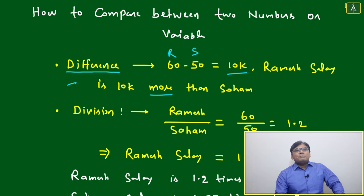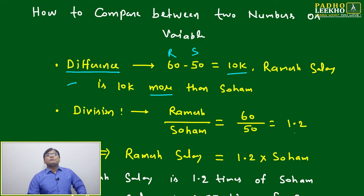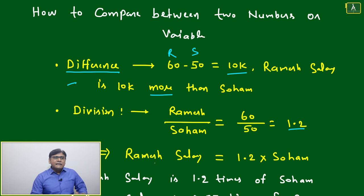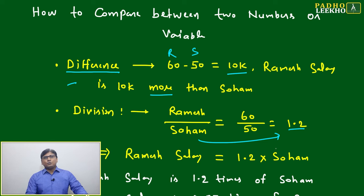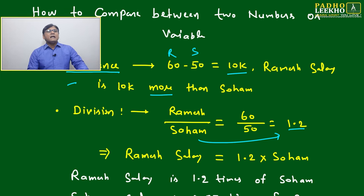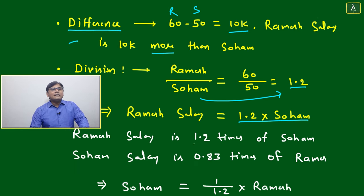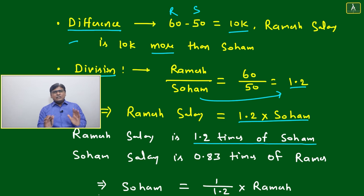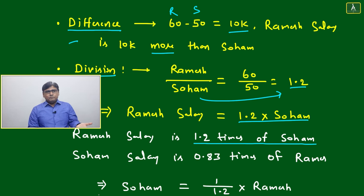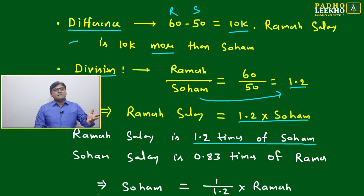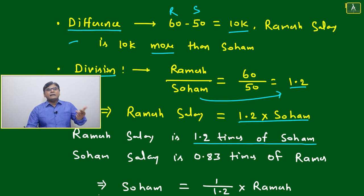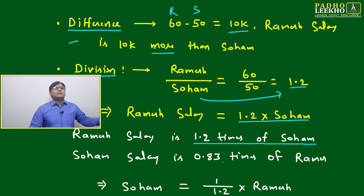Now dividing Ramesh by Shoham: 60k divided by 50k equals 1.2. We can write this as: Ramesh's salary = 1.2 × Shoham's salary, meaning Ramesh's salary is 1.2 times Shoham's. This is based on division. These two operations — difference and division — are fundamental, and all arithmetic tools are built from them.